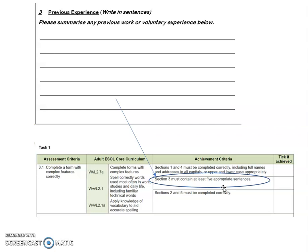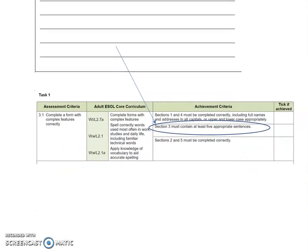What do we mean by appropriate sentences? We mean that they need to include complex features, such as complex grammar. We don't just want simple sentences. We want the use of linkers, discourse markers, in order to be able to write complex sentences, possibly conditionals, mixed conditionals, all of these. The spelling of familiar words needs to be accurate — words that are used in work, studies and daily life need to be spelt correctly. And finally, you need to showcase your vocabulary to be suitable for Level 2. That's what we mean by appropriate sentences.